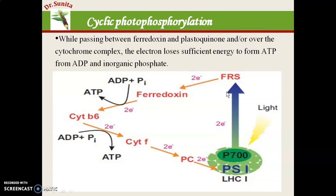Cyclic photophosphorylation occurs when light conditions are low, or when the dark reaction is not occurring — when the plant needs minimal energy. When NADPH already synthesized in the cell is not being used by the plant, the synthesis of NADPH stops, and at that time only cyclic reaction takes place. When the plant has excess NADPH present, it does not need to synthesize more NADPH, so the cyclic reaction occurs — only ATP is synthesized in this reaction, not NADPH.